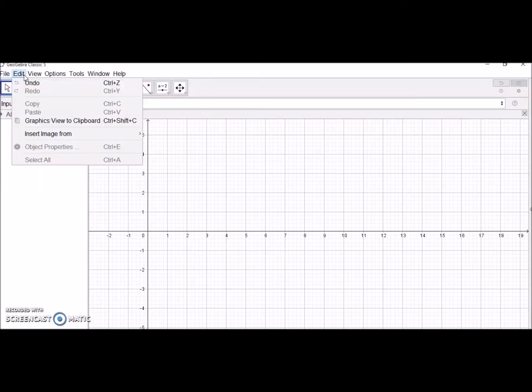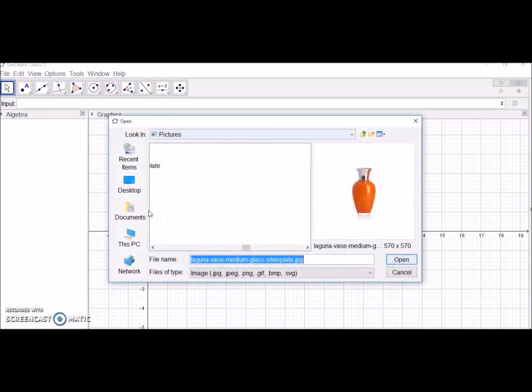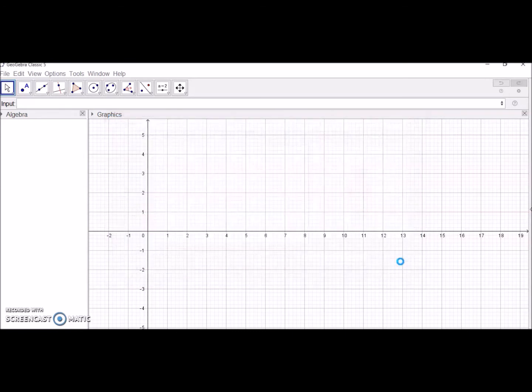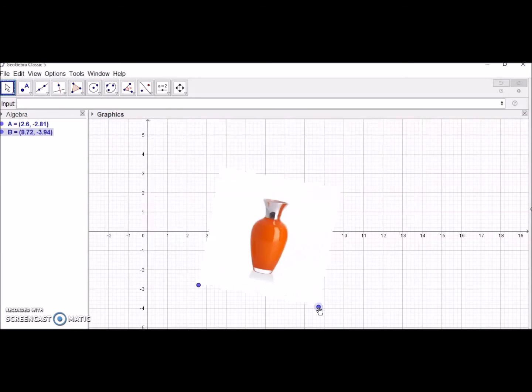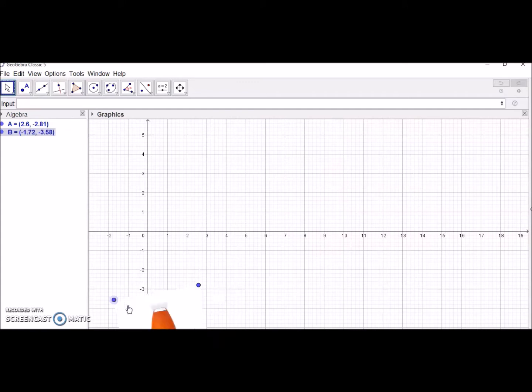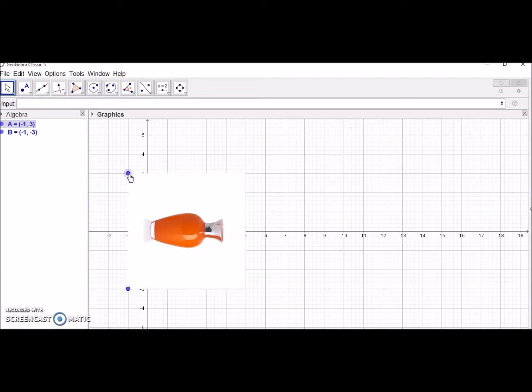You need to go to Edit and Insert Image from your file. Once you selected your image, you should adjust it by rotating and making it on the x-axis.